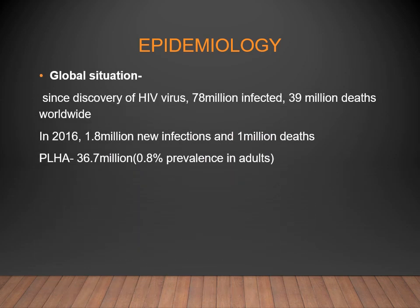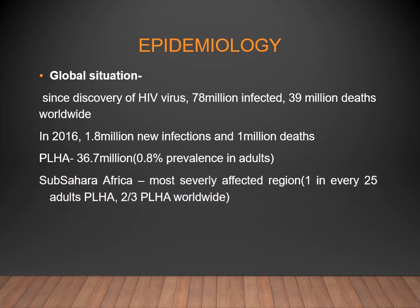Regarding global epidemiology: since 1981, approximately 78 million people worldwide have been infected and 39 million deaths have occurred. In 2016 data, there were 1.8 million new infections, 1 million deaths, and 36.7 million people living with HIV — a prevalence of 0.8% in adults. The most severely affected region is Africa, where 1 in every 25 adults is infected, representing about 2–3 times the worldwide average.